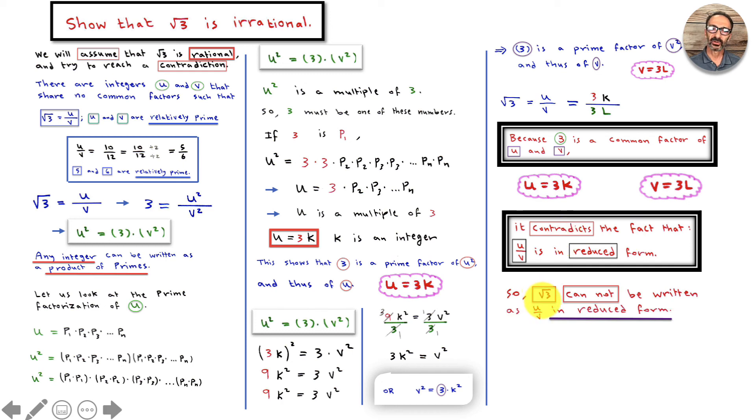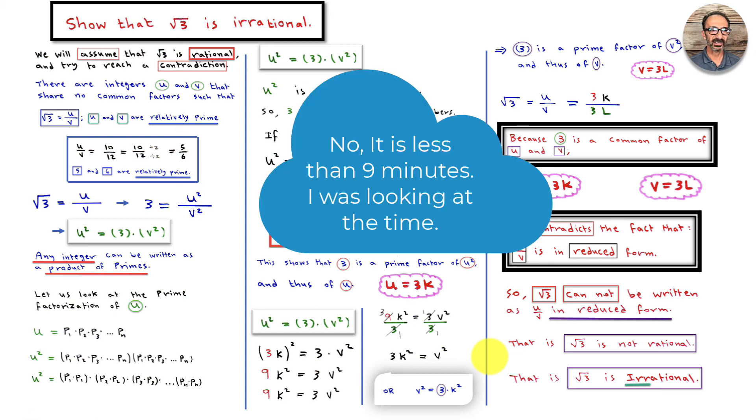So square root of 3 cannot be written as u over v in reduced form. That is, square root of 3 is not rational. That is, square root of 3 is irrational. That should do it.